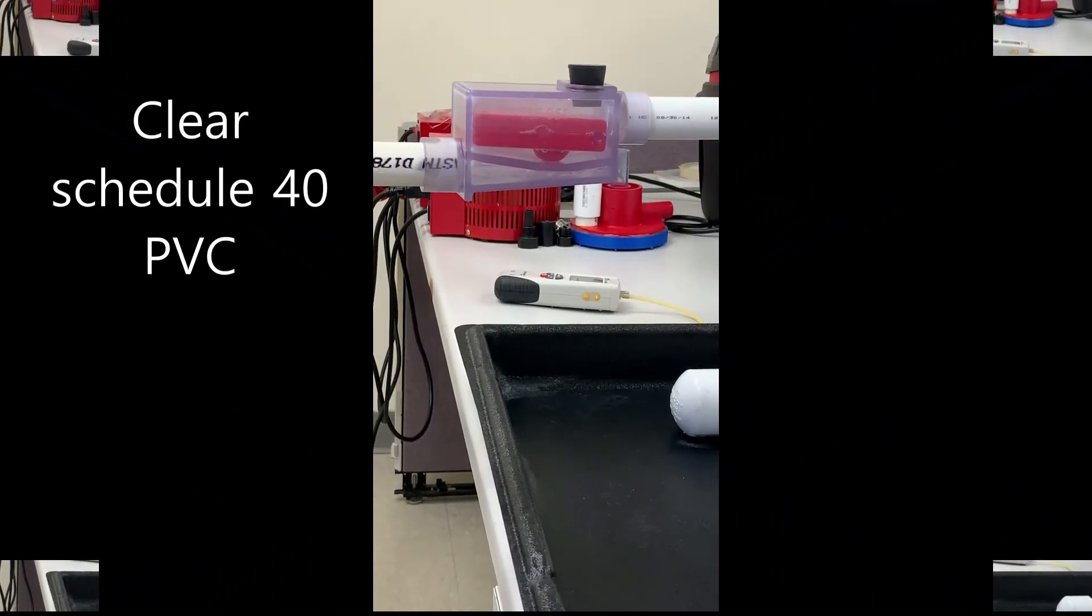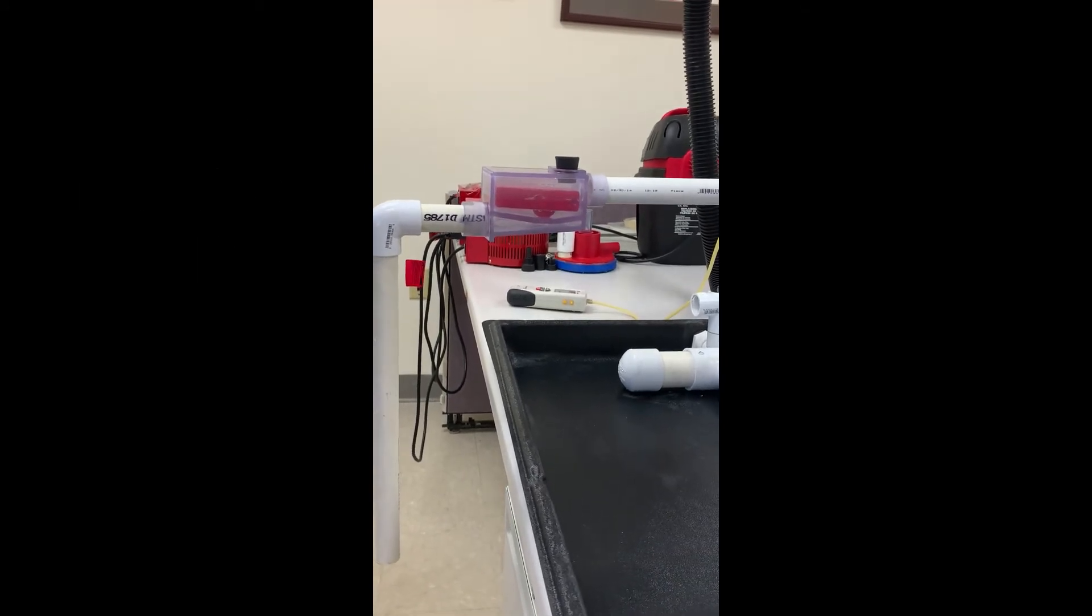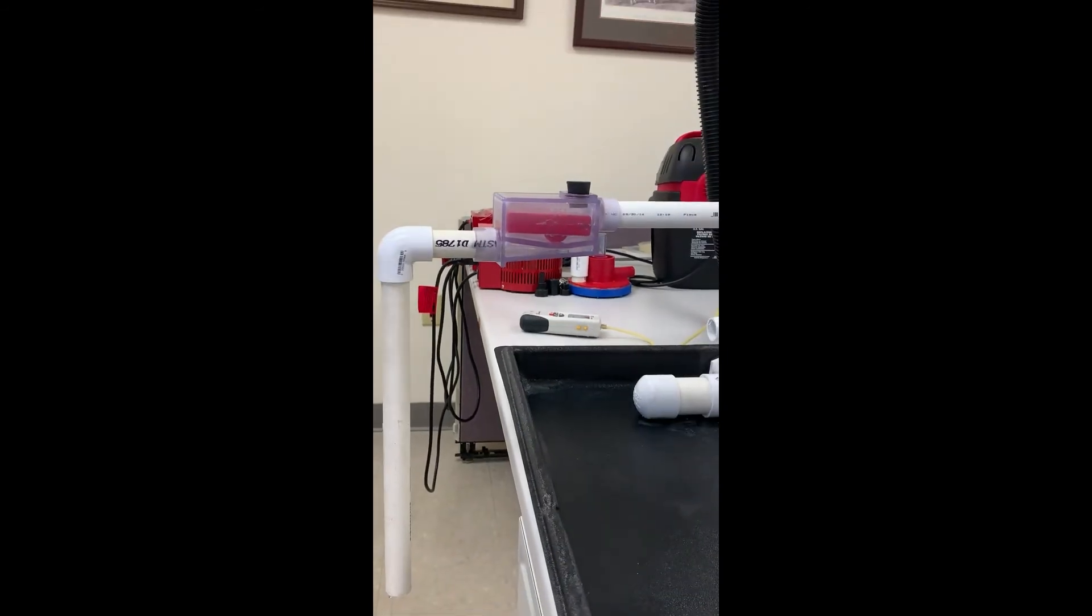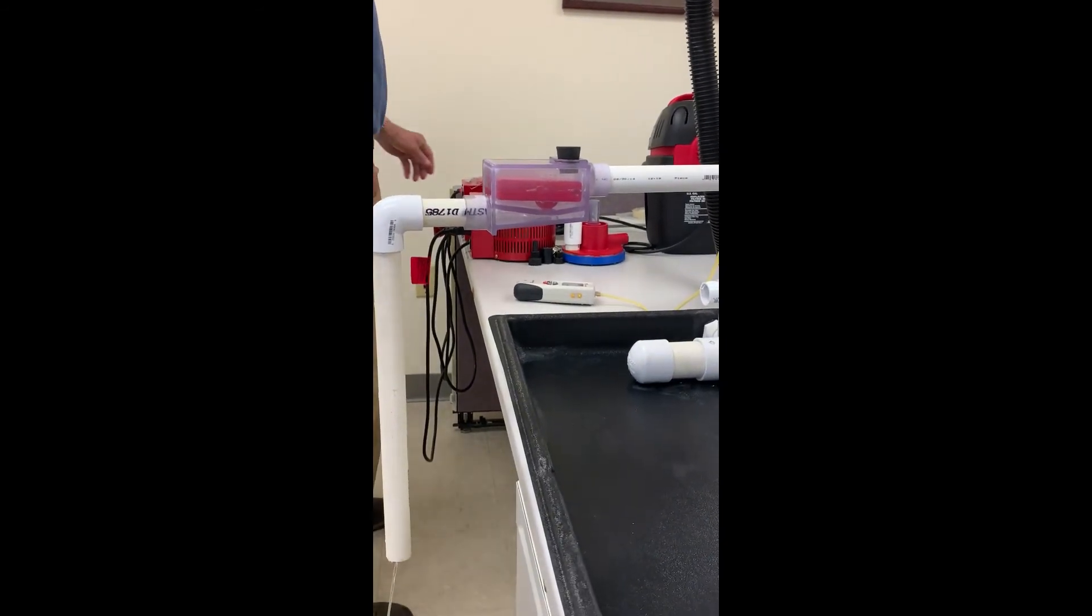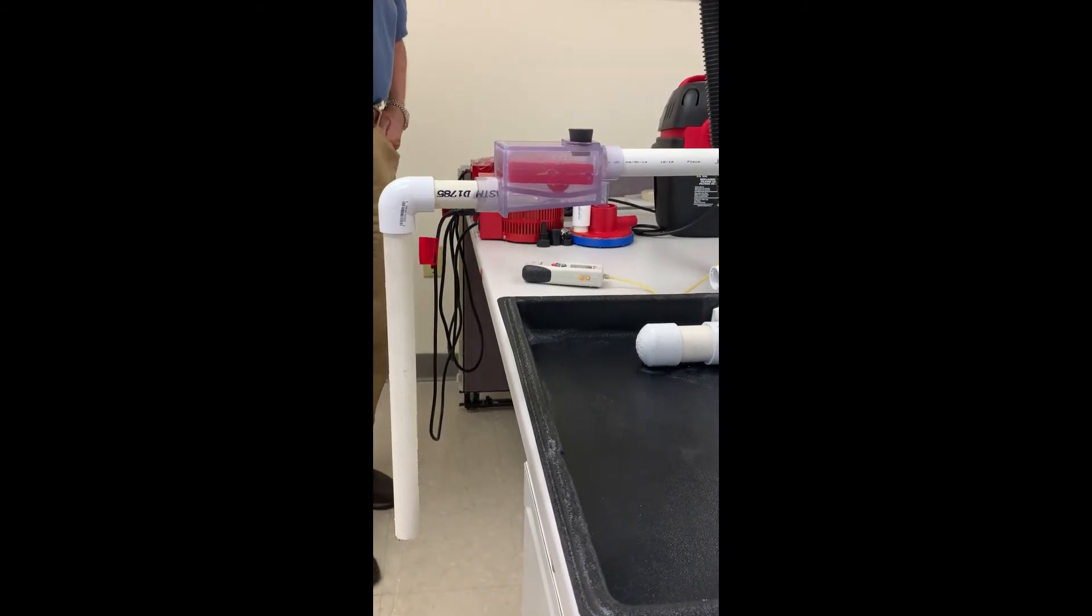This is clear PVC. You can see where the water level is on the float. And I'm going to turn the water off now.